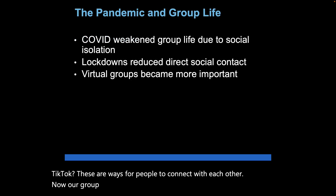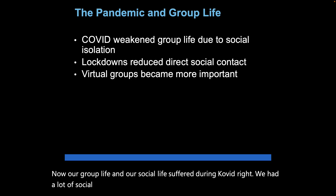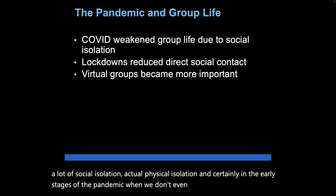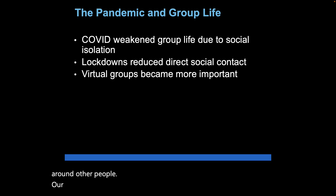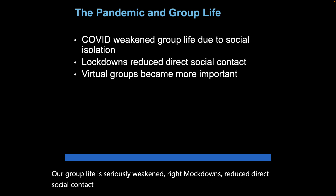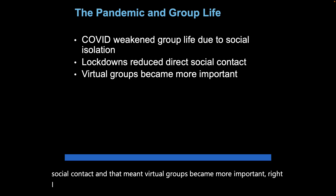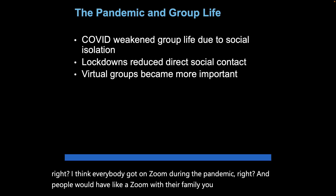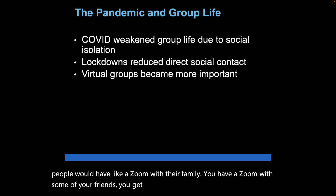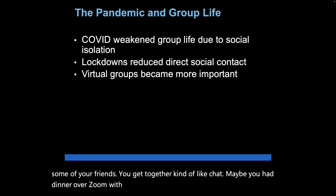Our group life and social life suffered during COVID. There was significant social and physical isolation, especially in the early stages of the pandemic when we didn't know how safe it was to be around others. Lockdowns reduced direct social contact, making virtual groups more important. People used Zoom to gather with family and friends — having dinner over Zoom, chatting — as technology-based connection became essential.